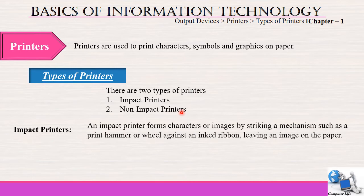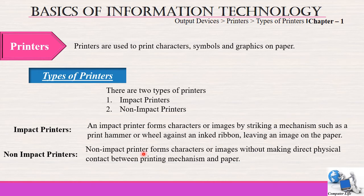Impact printers form characters or images by striking a mechanism such as a print hammer or wheel against an ink ribbon, leaving an image on the paper — so impact printers use a striking mechanism. Non-impact printers form characters or images without making direct physical contact between the printing mechanism and paper. Hence there is no striking mechanism; instead laser light is used to produce the print.